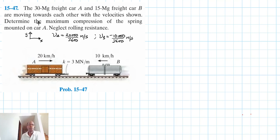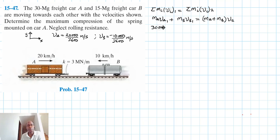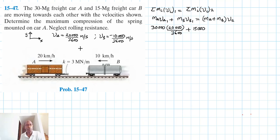Using conservation of momentum: the summation of m_i times v_i1 equals the sum of m_i times v_i2. We have m_A times vA1 plus m_B times vB1, which equals (m_A plus m_B) times v2. This becomes 30,000 times 20,000 divided by 3600, plus 15,000 —